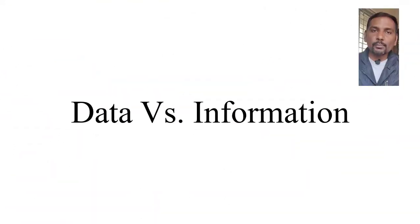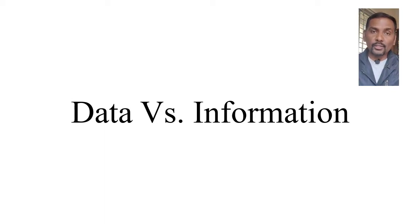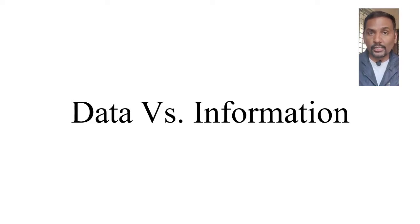Let us discuss some key terminologies used in this chapter. Number one is data — unprocessed facts and figures are called data. The second is information — once you process the data, you get information. When we talk about data, there are two types: qualitative data and quantitative data. Do comment and let me know what is qualitative data and what is quantitative data.